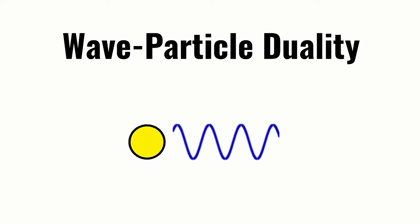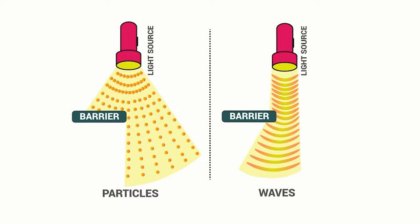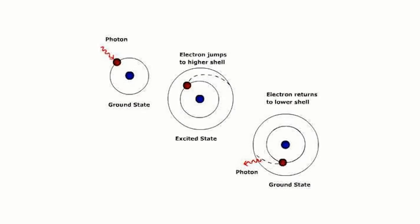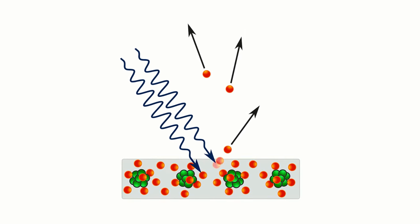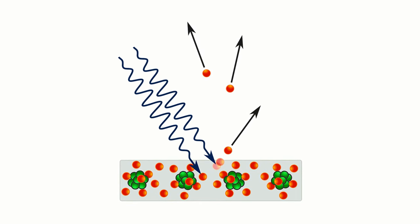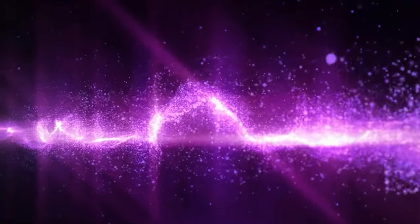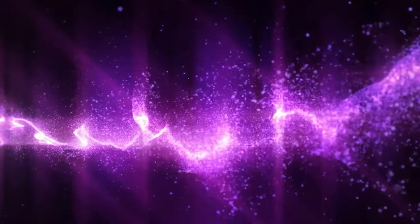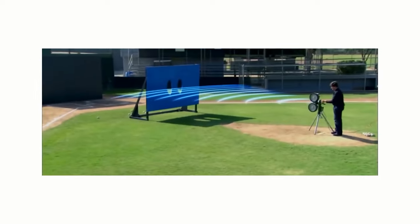Before we dive into the actual topic, it is essential to understand wave-particle duality. Wave-particle duality is a fundamental concept in quantum mechanics that describes the dual nature of matter and radiation. It refers to the observation that particles, such as electrons and photons, can behave as particles and waves under different experimental conditions. The wave-like behavior of particles is most commonly observed in experiments involving diffraction, interference, and superposition — or in our case, the double-slit experiment.